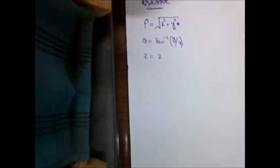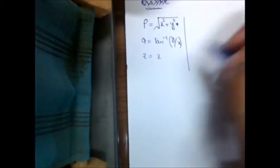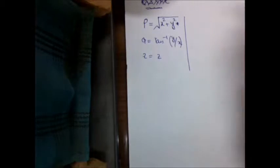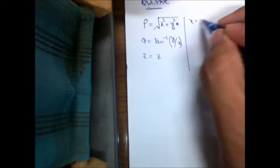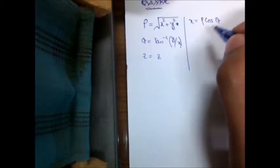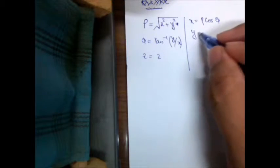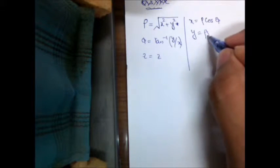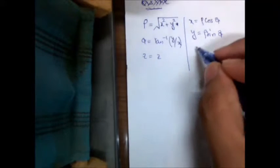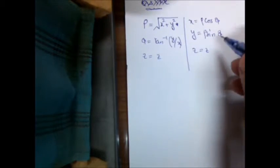We can go back from cylindrical coordinate systems to Cartesian coordinate systems by putting x equal to rho cos phi, y equal to rho sin phi, and z equal to z.